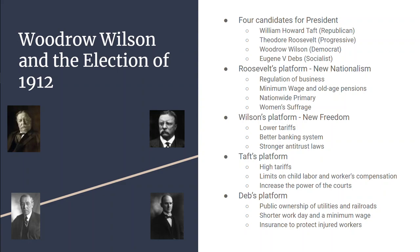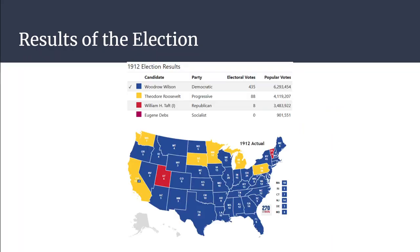Then you have Eugene V. Debs. He wanted public ownership of utilities, public ownership of railroads, a shorter working day, and a minimum wage. Debs was also a fan of worker protections and insurance to help injured workers.